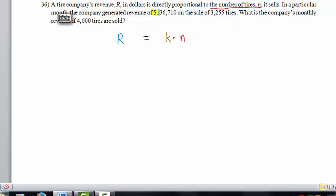And we will use this information here to calculate K, the constant of proportionality. 136,710 equals K times 3,255.